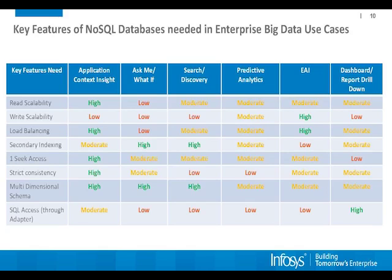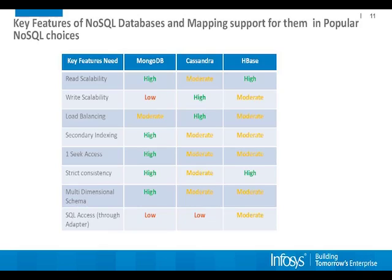These are the key features needed, but security is excluded from this framework because we all know it is needed for all use cases — and at the technology level, none of these technologies currently give very good support for security; it is still evolving. The next layer evaluates MongoDB, Cassandra, and HBase — the most popular ones and those where Infosys has maximum experience.